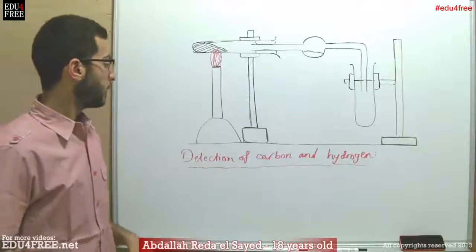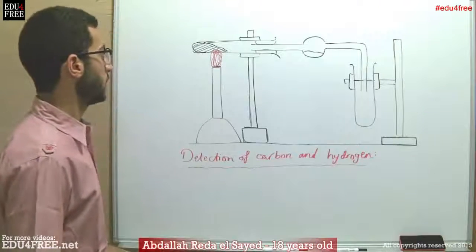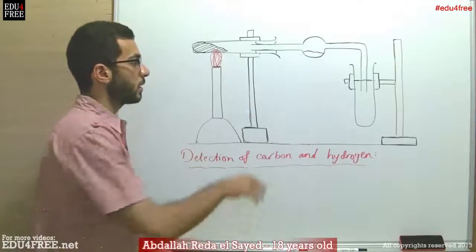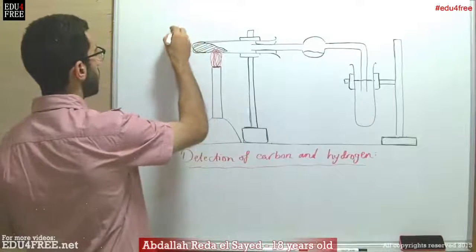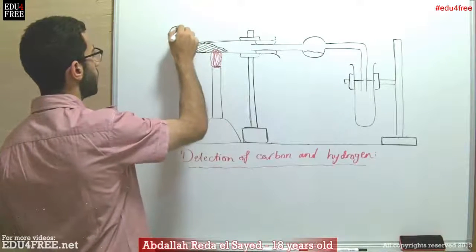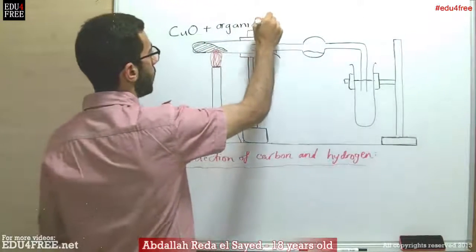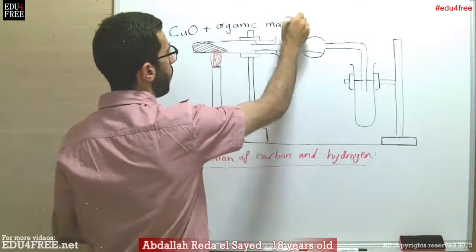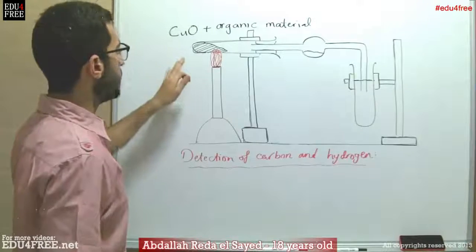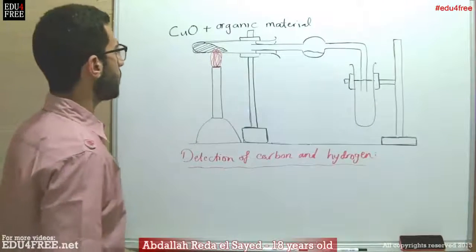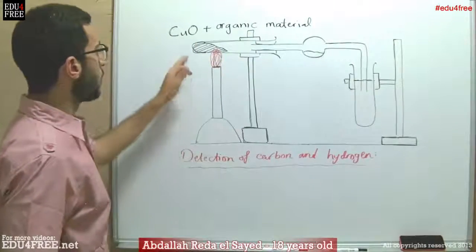Today we are going to learn how we can detect carbon and hydrogen, or the presence of carbon and hydrogen in organic materials. We will set up an apparatus where in this test tube we will have copper oxide plus organic material — whatever the organic material is, like plastic, like a data plug, any substance that contains organic matter. We will expose this mixture to a flame so it will be heated.